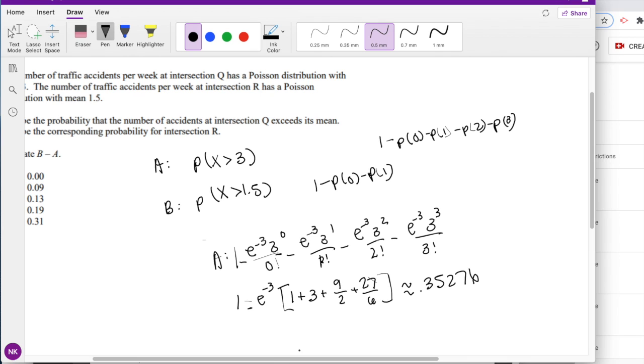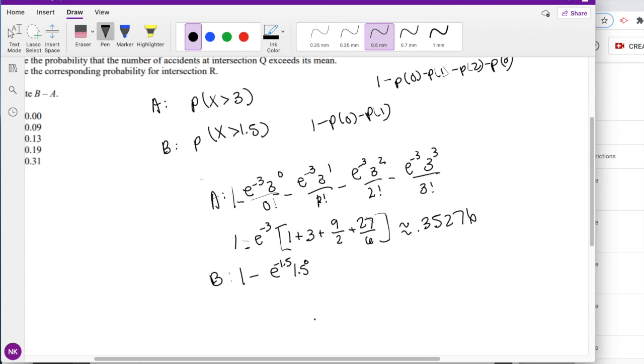Let's do B. B is 1 minus e to the negative 1.5, 1.5 to the 0 power over 0 factorial, minus e to the negative 1.5, 1.5 to the 1 over 1 factorial.